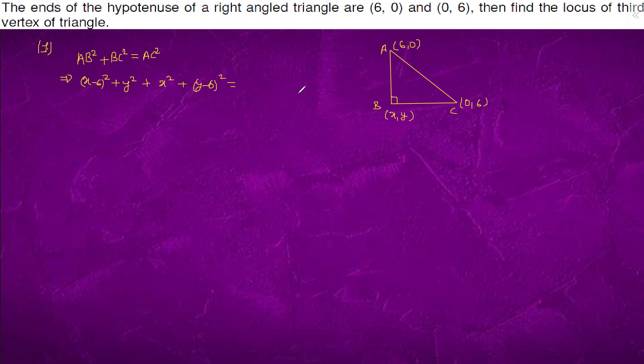Equals to 72, which is 6 square plus 6 square. From here we will get what? x square plus 36 minus 12x plus y square plus x square plus y square minus 12y plus 36 equals 72. So this 36, this 36 will go along with this.